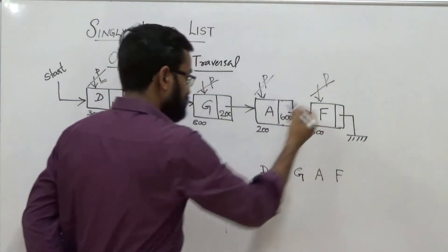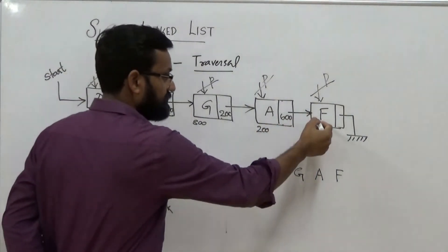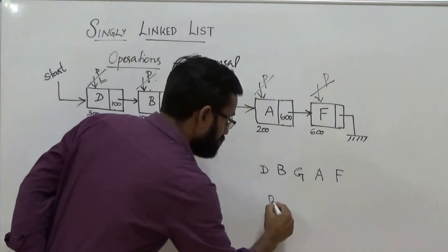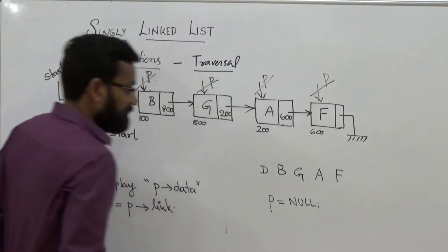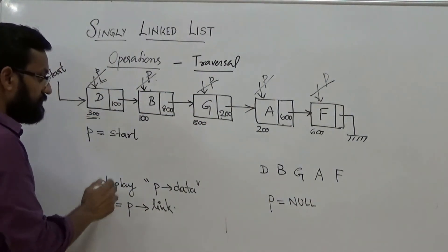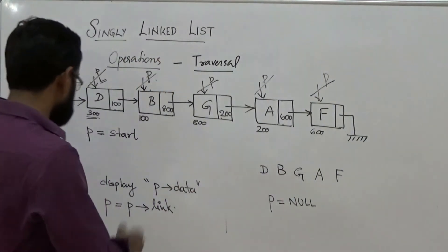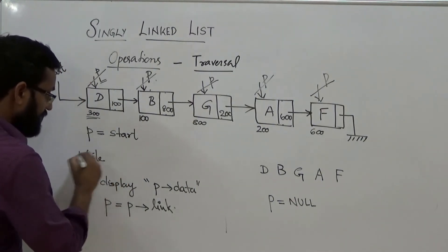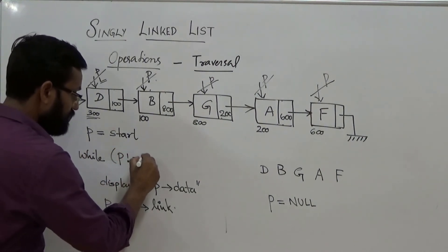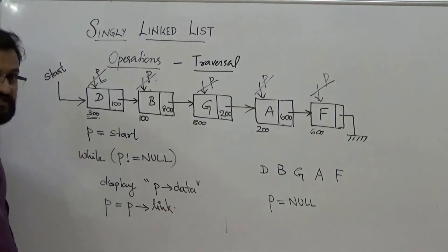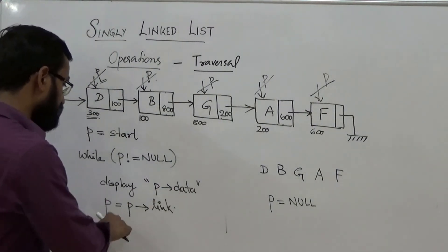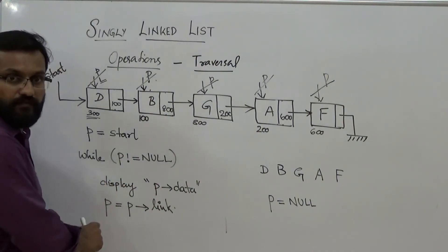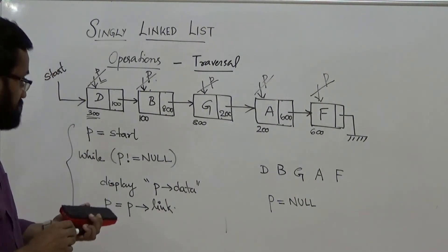If you perform one more shift operation after displaying the content of the last node — using P = P.link — P will become None. So you perform this operation until it satisfies the termination condition. You can write a while loop: while P is not equal to None, do these two steps: display P.data, then shift the pointer with P = P.link. Whenever P reaches None, the loop terminates. This pseudocode performs traversal of a linked list starting from the start node.